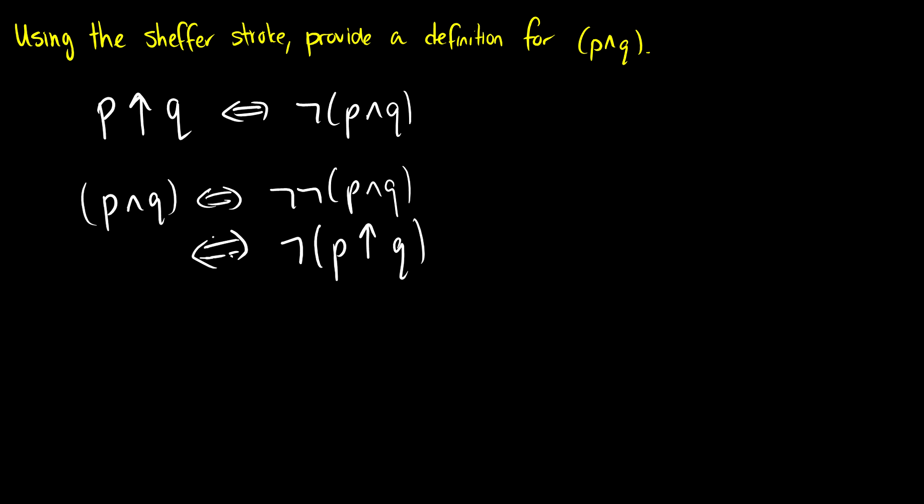Because we did that very simple truth table with p up p we know how to define the negation.